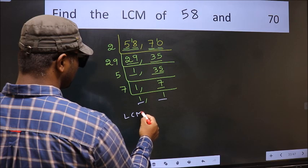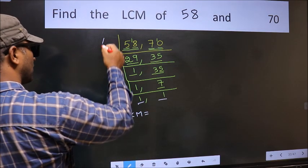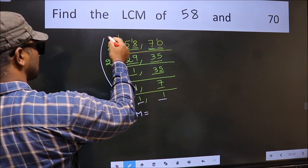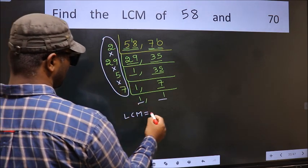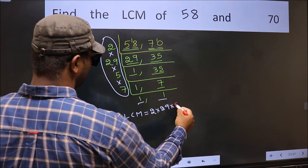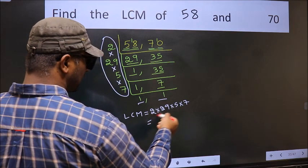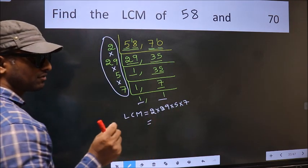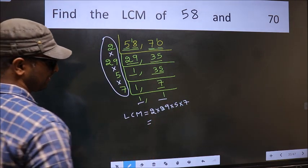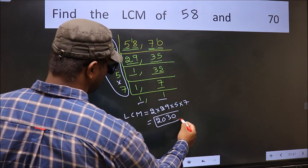So our LCM is the product of these numbers: 2×29×5×7. When we multiply these numbers, we get 2, 0, 3, 0 as our LCM.